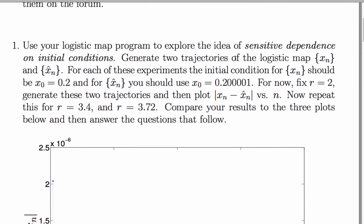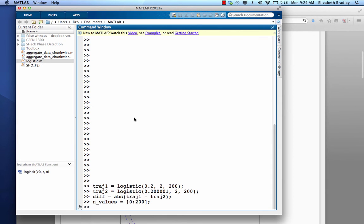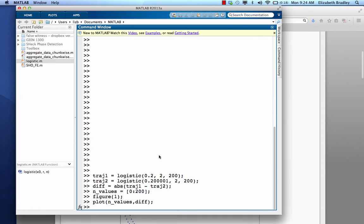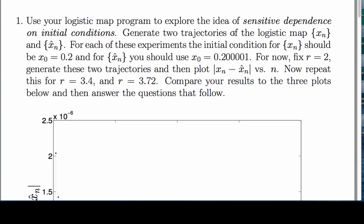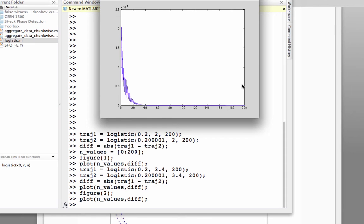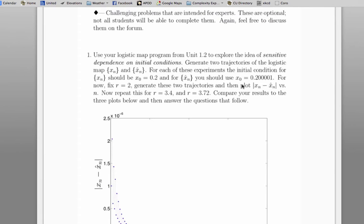The next task was to plot the absolute value of the difference between those trajectories versus n. Here's the difference. Here I'm generating the n values, setting up a figure, doing the plot. There's the figure. Let's keep that in mind. Then we were supposed to repeat this for r equals 3.4 and r equals 3.72. So I'll do that quickly. Here's that figure. The last task was to do the same thing for r equals 3.72. There's the third plot.